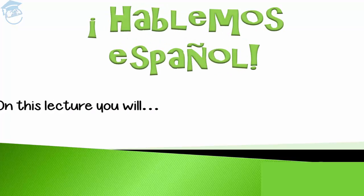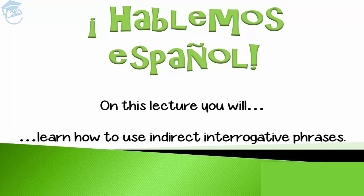Welcome back to edulpediaworld.com, to the Spanish intermediate level — hablemos español. In this lecture you will learn how to use the indirect interrogative phrases. We just saw in a previous video that you use some words to create questions: qué, cuándo, cómo, quién. But you also have in Spanish interrogative phrases that act in an indirect way. Let's see what it's about.